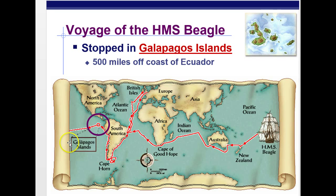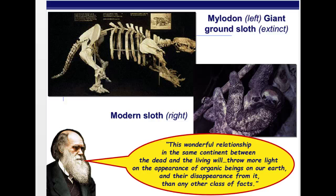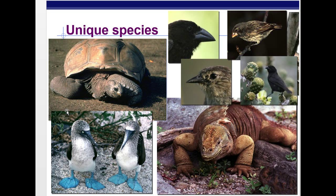Going back to Darwin's voyage, he saw many things — from native people to an earthquake — did a lot of geology studies along the way, and as a young, somewhat naive guy was just collecting everything he could: specimens from everywhere he went, even dead specimens. He wondered a lot about what he saw. He was a good observationist — wondering, for instance, why extinct armadillo-like species and armadillos would be found on the same continent. He saw a lot of fossils, did a lot of digging, and encountered many unique species.